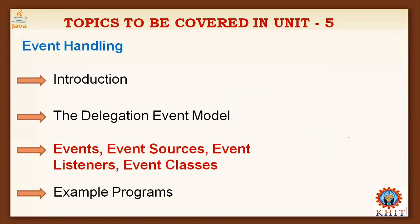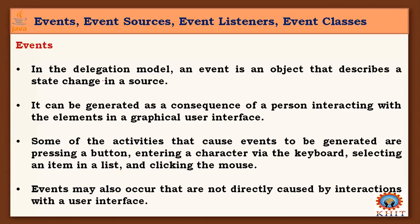Now let's look at what events we have, what event sources are available, from where events are generated, what event listeners are available, and what event classes are listed. In the delegation model, an event is an object that describes a state change in a source.